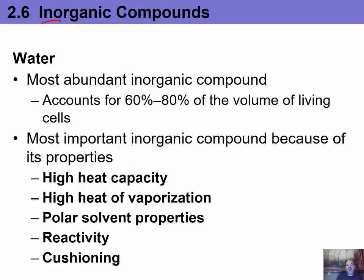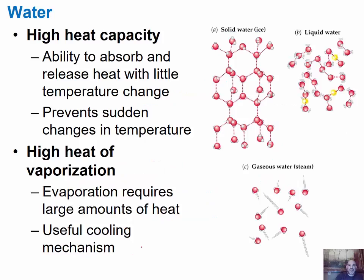Now let's look at inorganic compounds, starting with water. Water is the most abundant inorganic compound — it accounts for 60 to 80 percent of the volume of a living cell. It is the most important inorganic compound because of its properties; if water did not have these properties, life as we know it wouldn't exist. Recall that water is a bent molecule — the oxygen pulls electrons harder, creating a partial negative charge on one side and partial positives on the other, making it a polar molecule. Important properties include high heat capacity, high heat of vaporization, polarity, the ability to dissolve polar and ionic substances, reactivity, and cushioning.